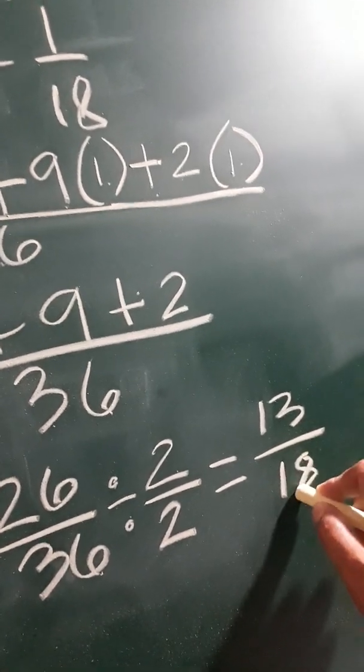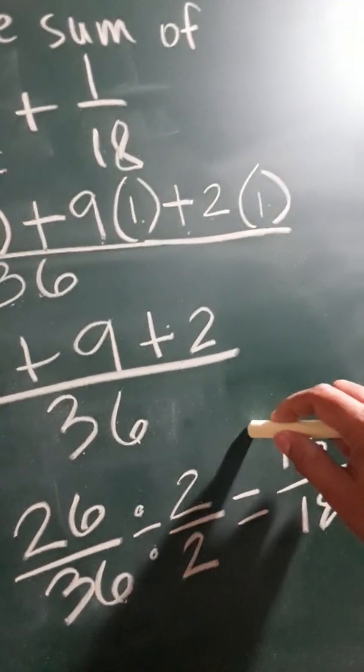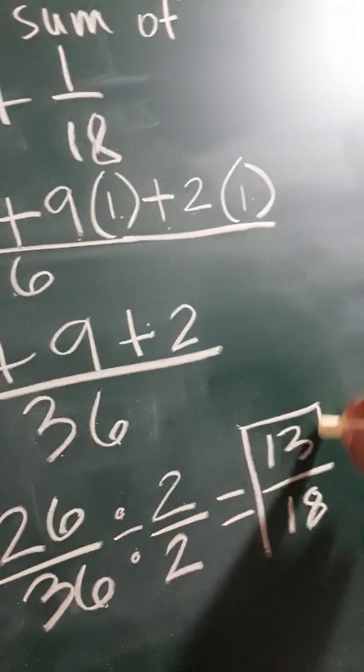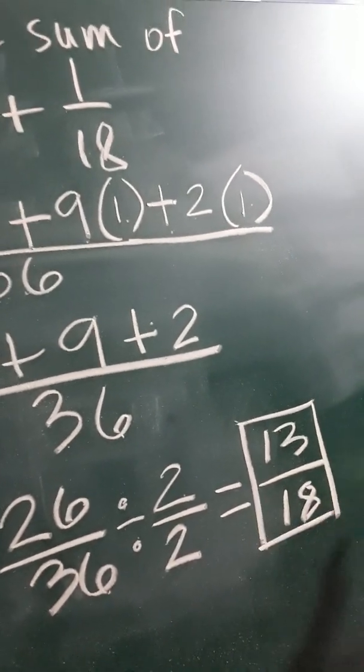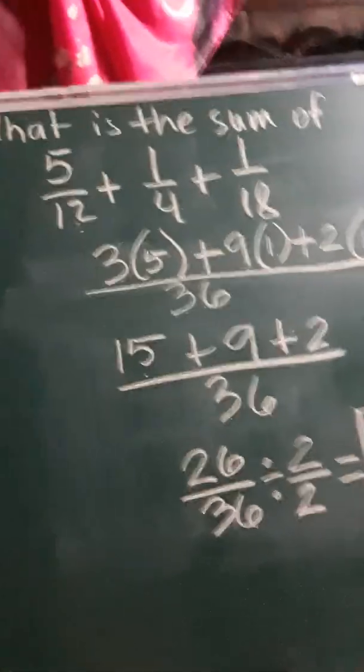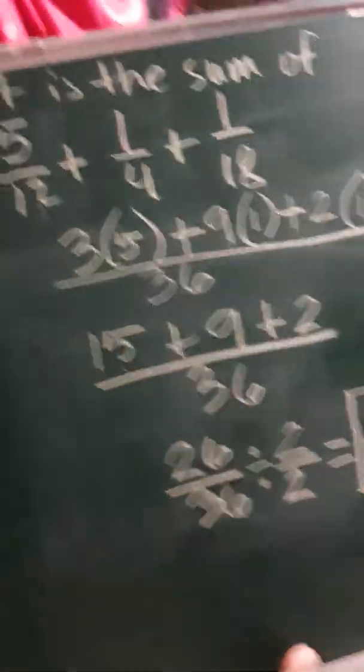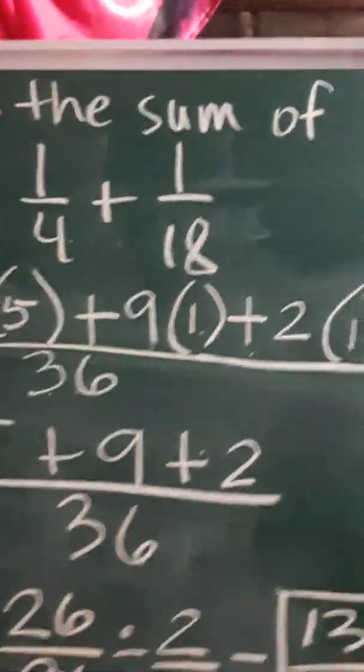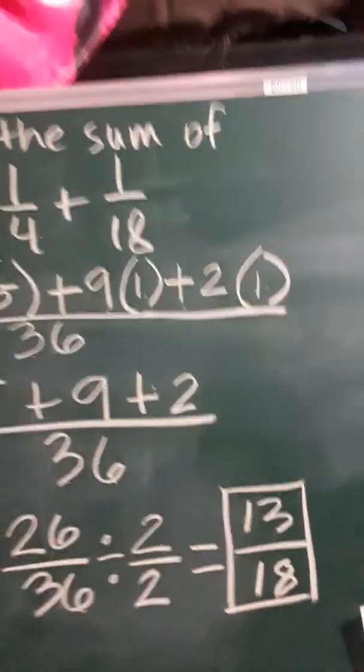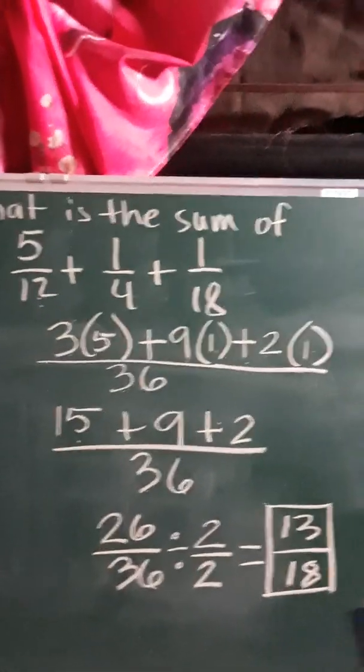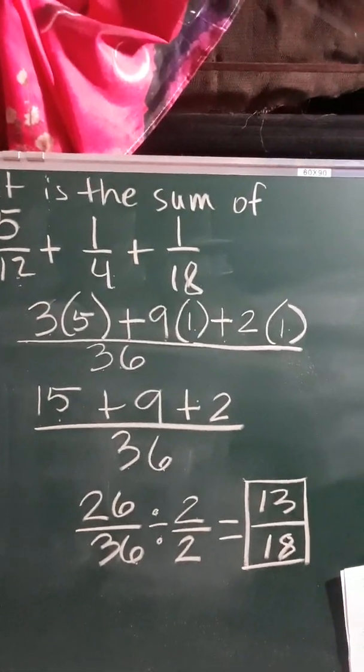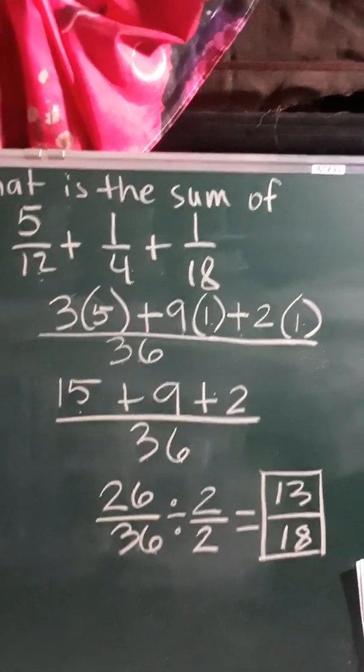13 over 18. Your answer must always be in lowest terms, so your answer is 13 over 18. That's how to get the sum of 5 over 12, 1 over 4, and 1 over 18.